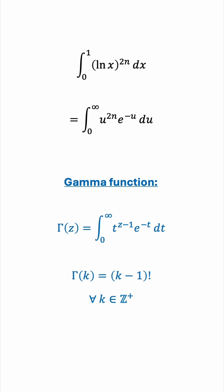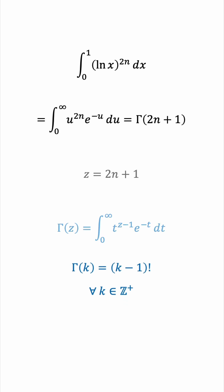Comparing our integral to the gamma function, we see that we do have this e to the negative u du, and we have our variable raised to the power of 2n. So, by comparison, z minus 1 must be our 2n, or z must be 2n plus 1. So, the integral we have is actually nothing but the gamma function evaluated at 2n plus 1. And now, we can exploit this amazing property to express the answer as 2n factorial.